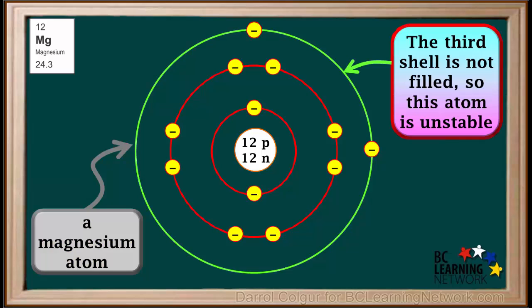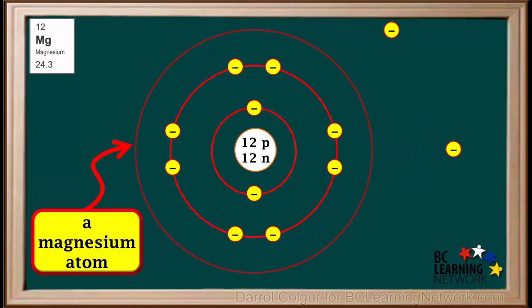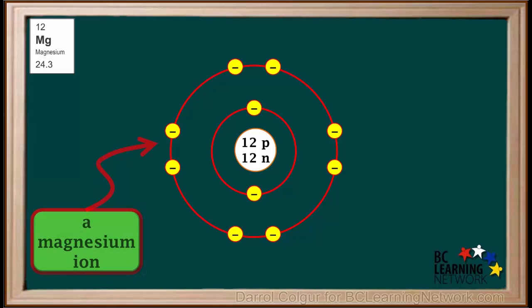So this is how we represent a neutral magnesium atom. The third shell of a magnesium atom is not filled. Atoms with partially filled shells tend to be unstable, so this atom is unstable. In order to become stable, this atom will lose these 2 electrons in the third shell. This is no longer called a magnesium atom — we must now call it a magnesium ion.